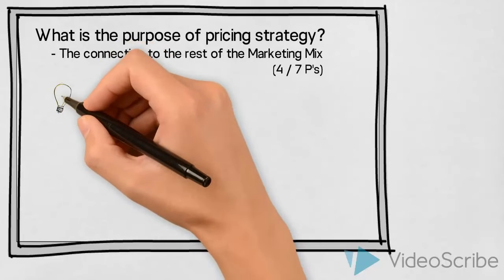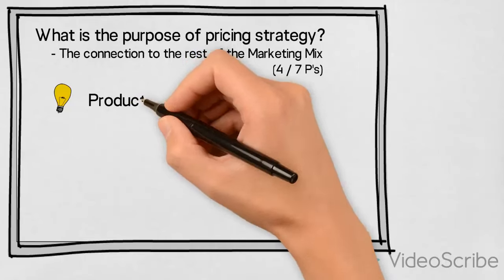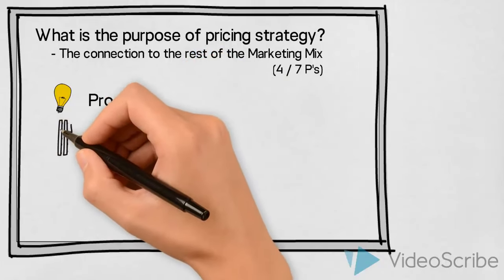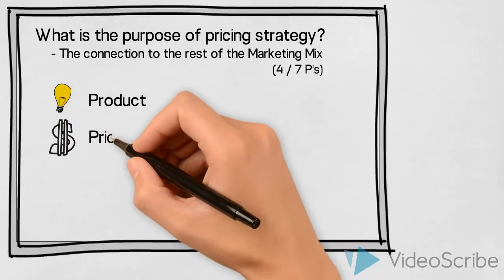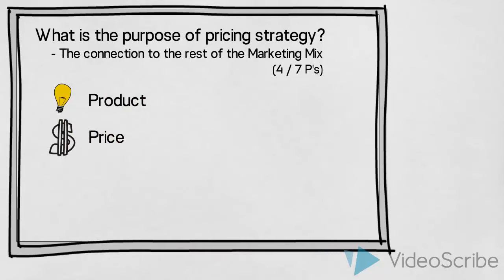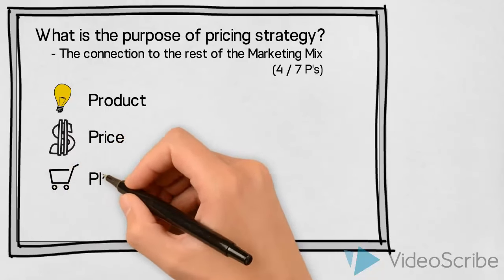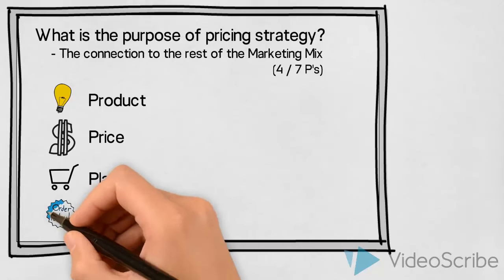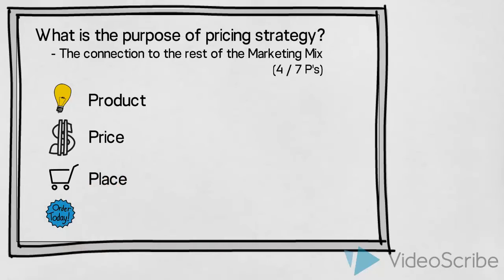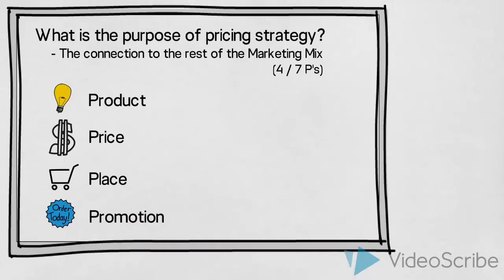First of all, any issues concerning the product — this would include packaging and all other elements in connection with the product. Secondly, a decision on price, which is what this video will address. Thirdly, you will need to decide on the choice of place — through which channels will you distribute the product or service? We will also need to make a plan of which promotional activities we will carry out in order to tell our customers about our product and encourage them to buy.